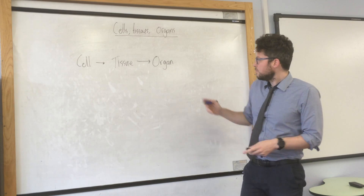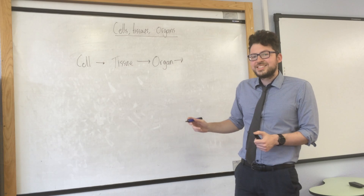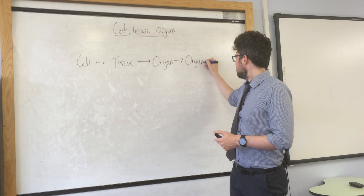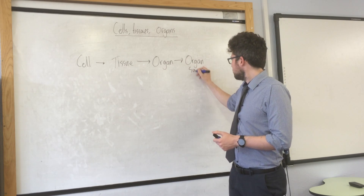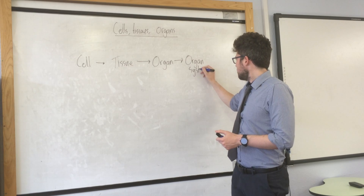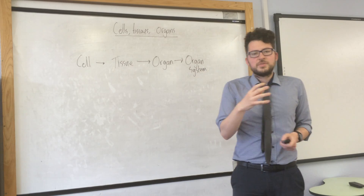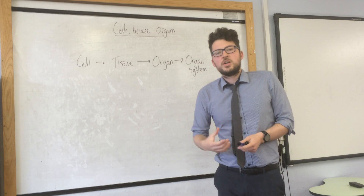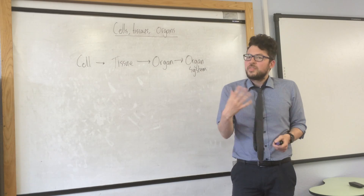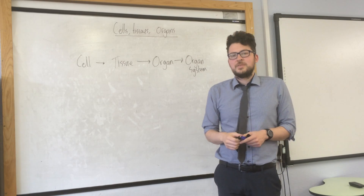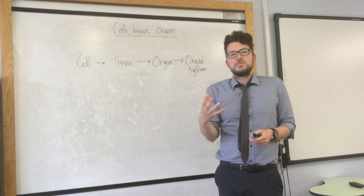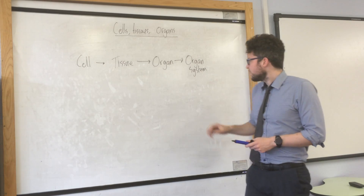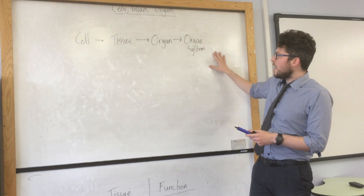From an organ, we can then look at an organ system. This is a group of different organs working together to carry out a function. For example, the digestive system, which is to break down food and absorb the nutrients from food.